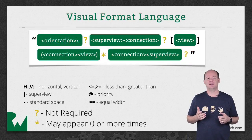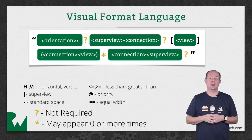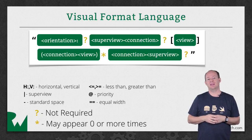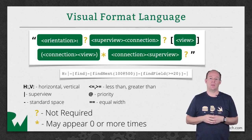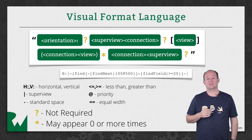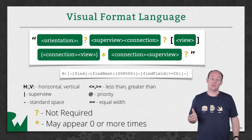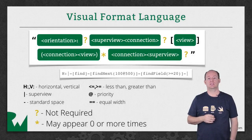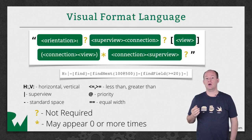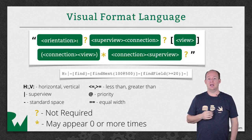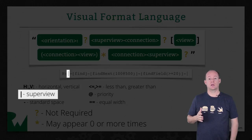If you look at the specification for the Visual Format Language, it may be hard to tell what it's expecting, but let's take a look at an example. This Visual Format String starts with an H colon, which specifies that we're working in a horizontal direction. You can only create constraints in one direction at a time. Then we have the pipe character, and that always represents the super view.